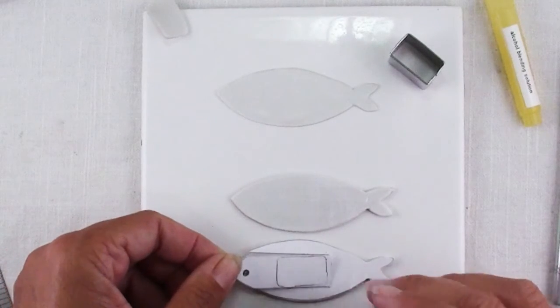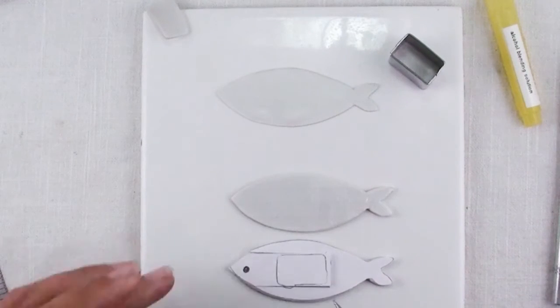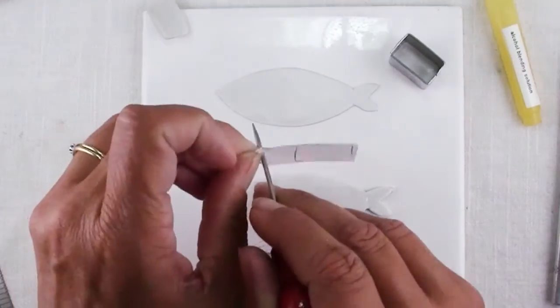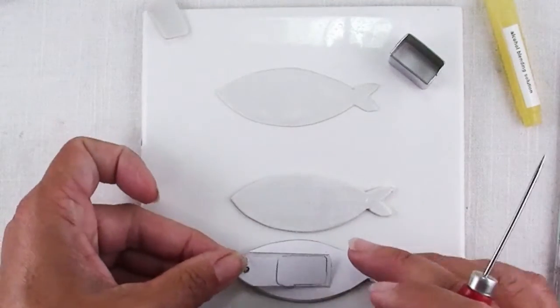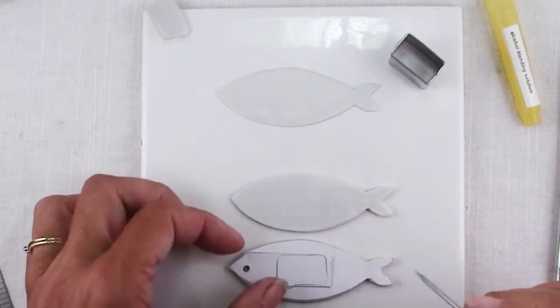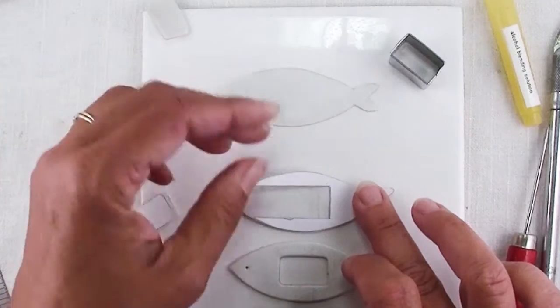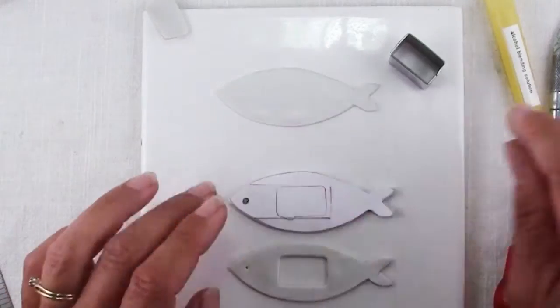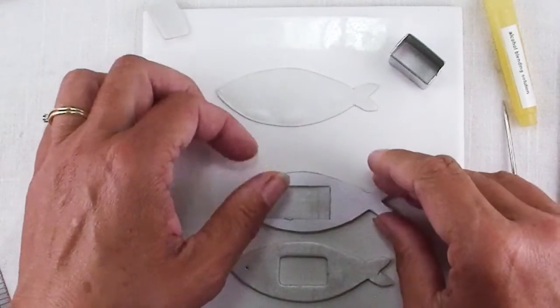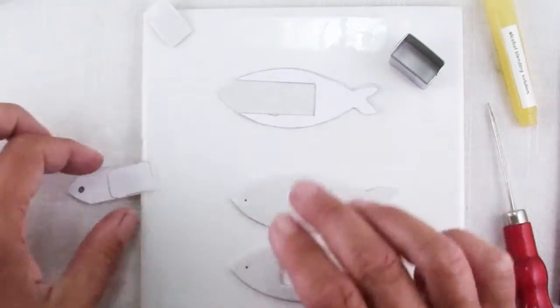Actually, first I want to make the hole with my awl first so I'm not pressing into the clay. Mark the center of my hole. On this one, all I need to mark is the center of the hole. And on this one, I need to cut out that entire slot that I drew.